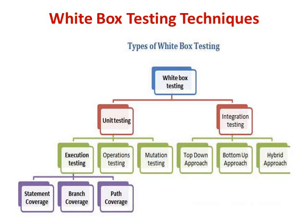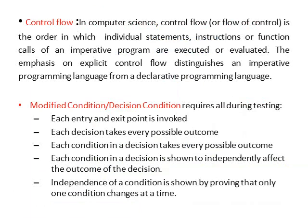In computer science, control flow is the order in which individual statements, instructions, or functions are executed and evaluated in imperative programs. The emphasis on explicit control flow distinguishes an imperative programming language from a declarative one. From a testing point of view, modified condition coverage requires that each entry and exit point is invoked, each decision takes every possible outcome, and each condition in a decision takes every possible outcome and is shown to independently affect the outcome of the decision.